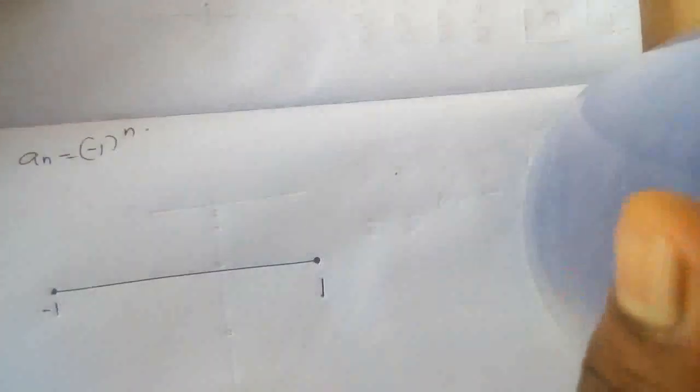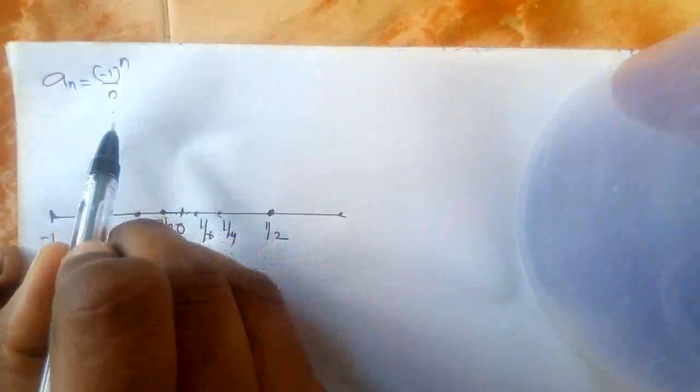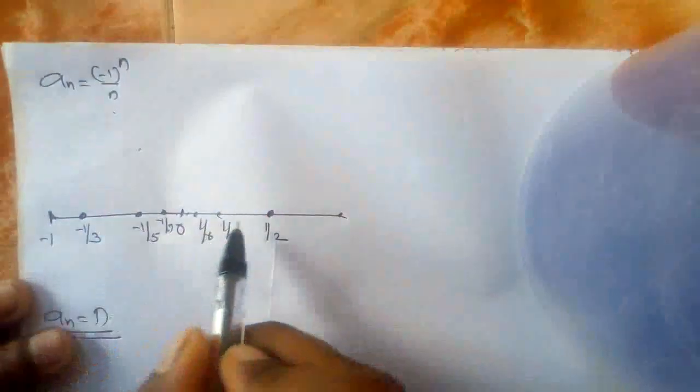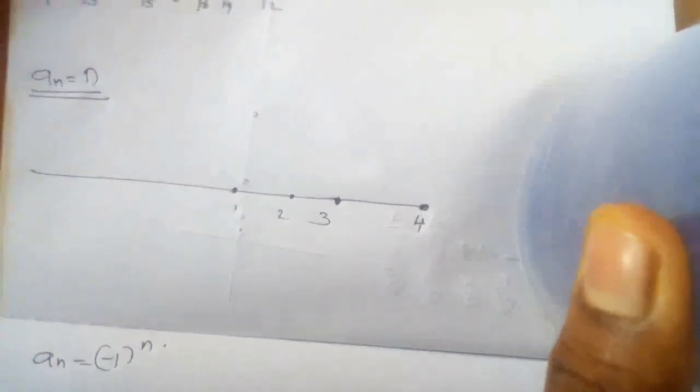So here we discuss four sequences. First, a_n = 1/n: as n tends to infinity, this goes to 0. Second, a_n = (-1)^n / n: as n tends to infinity, this also goes to 0. Third, a_n = n: as n tends to infinity, this goes to infinity. Fourth, a_n = (-1)^n: as n tends to infinity, a_n alternates between -1 and 1 — it does not go to a particular number, but oscillates between two points.